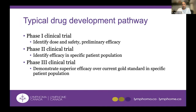In phase two clinical trials, you look at a discrete patient population — for example, second-line treatment for diffuse large cell lymphoma — and you're trying to understand how effective the drug is, with a better understanding of the safety signal in a more specific patient population. Then if a drug succeeds in phases one and two, a phase three clinical trial tries to demonstrate superior effectiveness over a gold standard in that specific patient population.